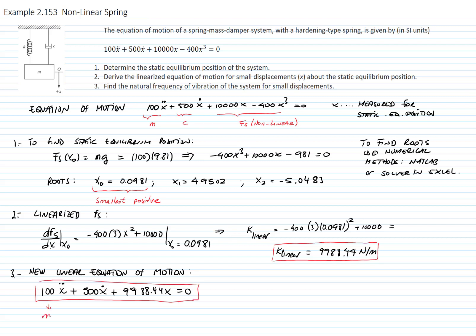What is with the acceleration is the mass, with the velocity is the constant of the damper, and with x is the constant of the spring. Now we have the equation in the form that we are very used to working with, and the natural frequency is the square root of the constant of the spring divided by the mass, which is 9988.44 divided by 100. So our natural frequency of vibration is 9.9942 radians per second.